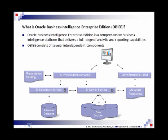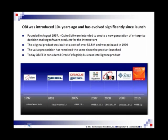Now let's talk a little bit about the history and evolution of Oracle Business Intelligence. Business intelligence is still a new and evolving technology when compared to other traditional transactional systems. In fact, it wasn't until 1989 that someone named Howard Dresner, later a famous Gartner Group analyst, proposed business intelligence as an umbrella term to describe the concepts and methods to improve business decision-making by using fact-based support systems.